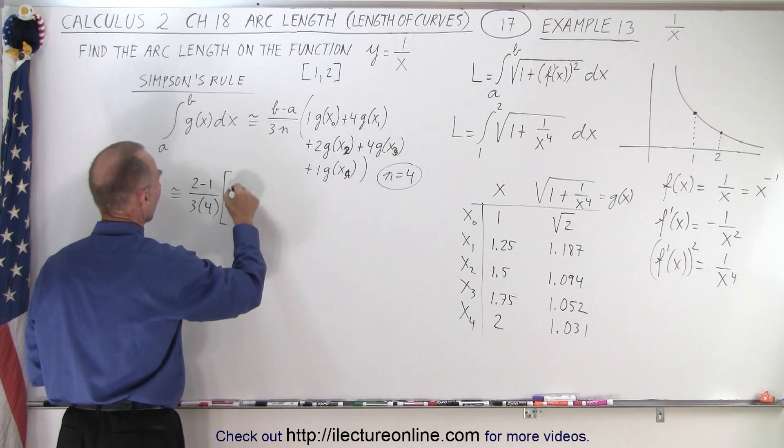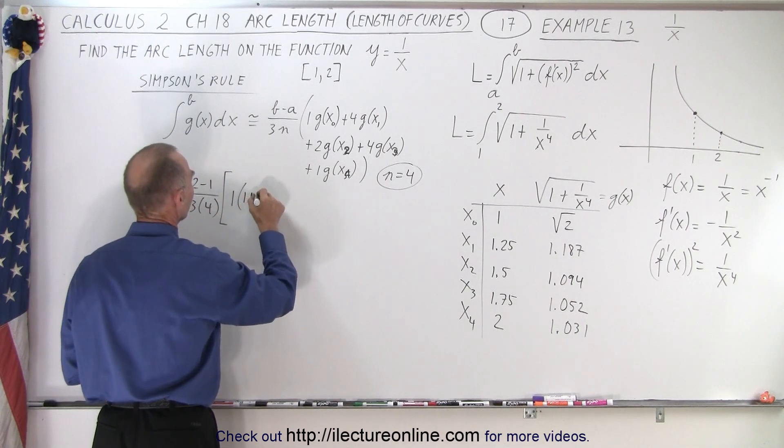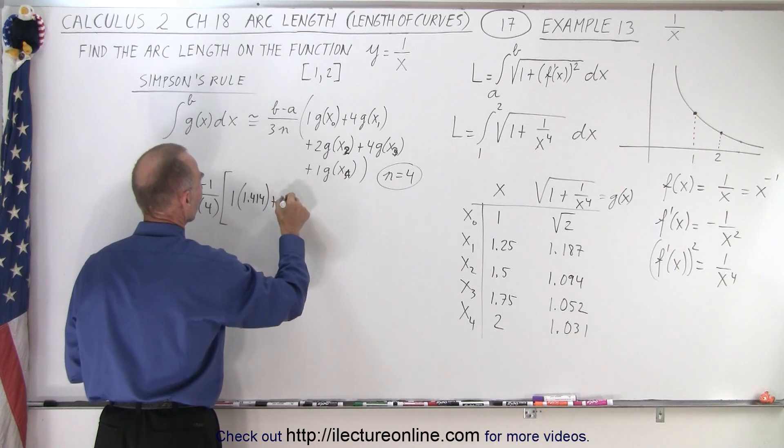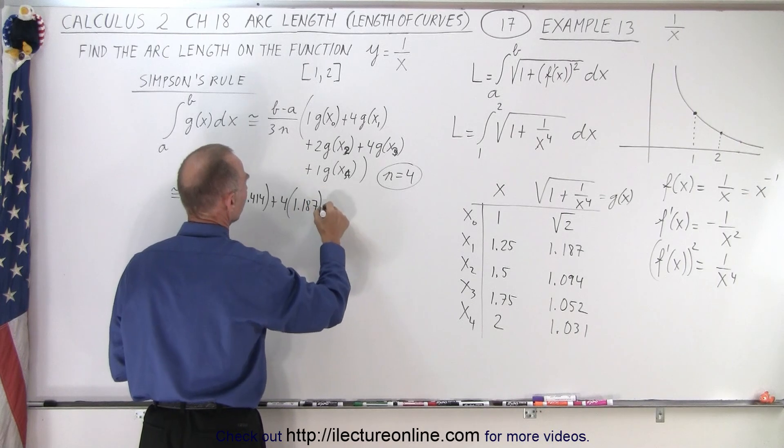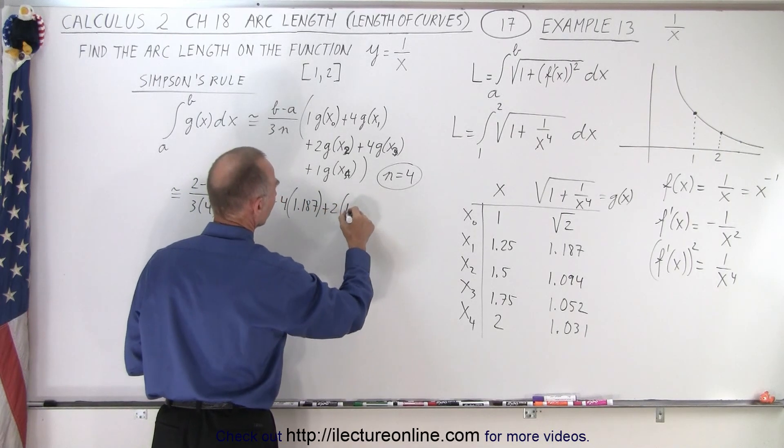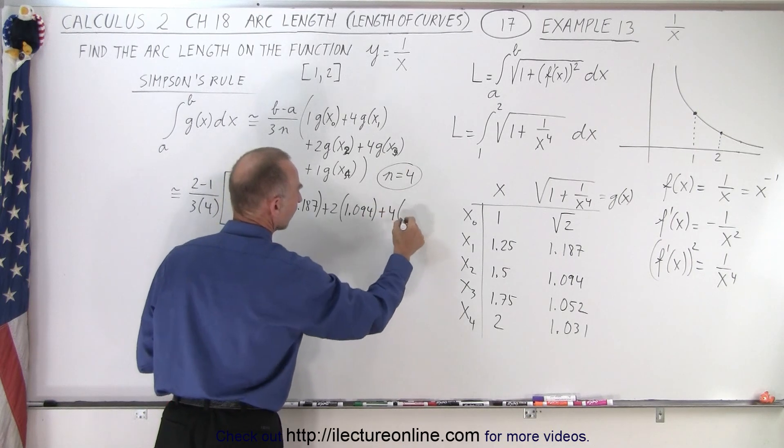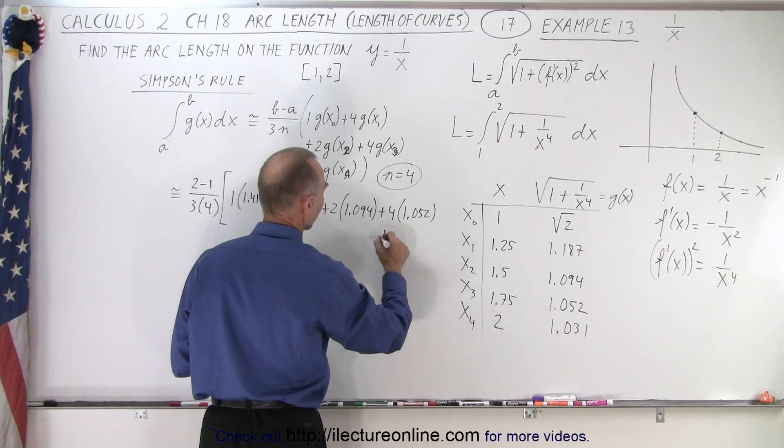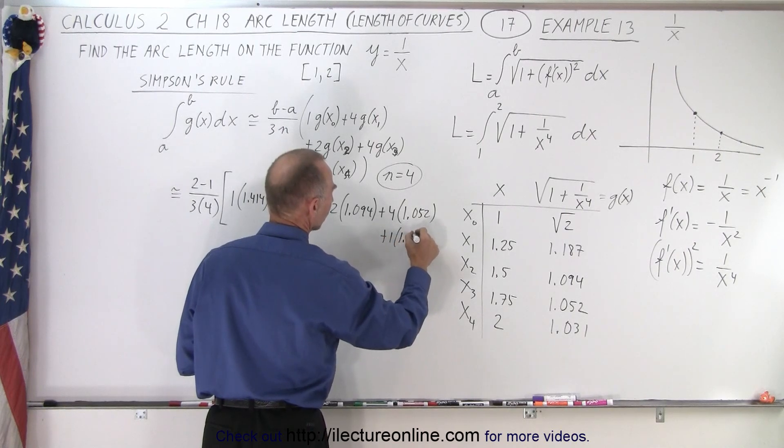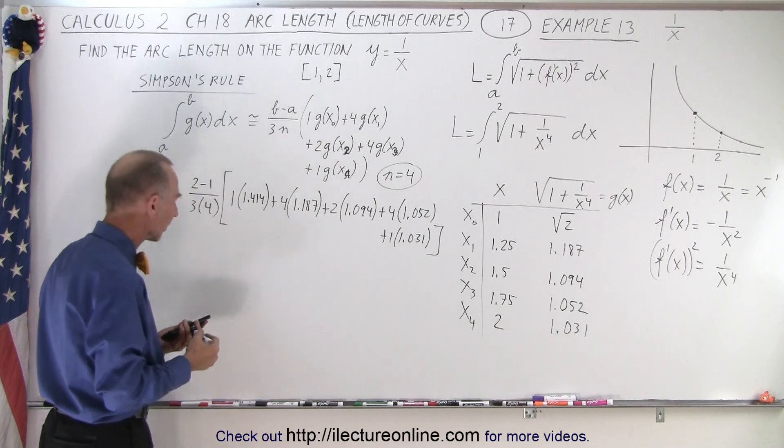Times 1 times the square root of 2, which is 1.414. Plus 4 times 1.187. Plus 2 times 1.094. Plus 4 times 1.052. And then plus 1 times 1.031.